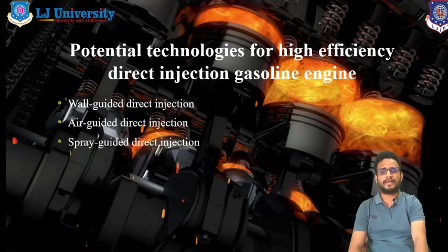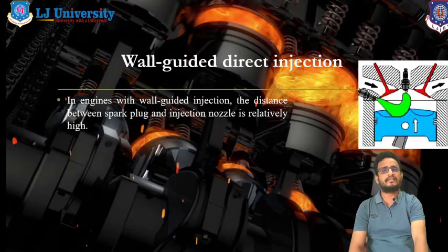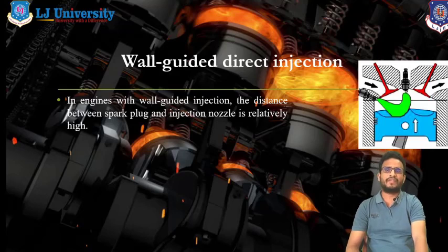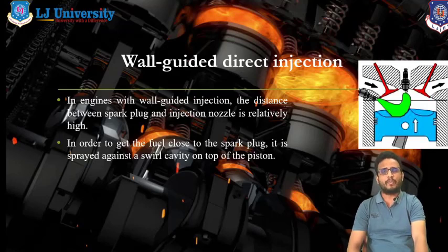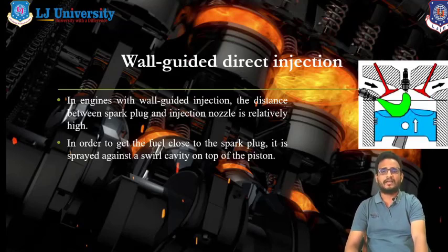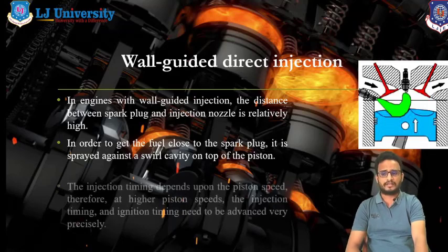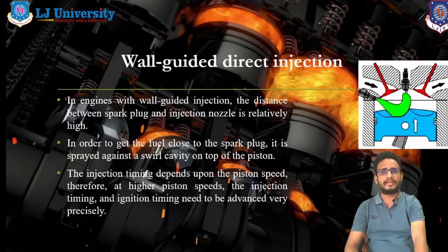Let us discuss all these systems one by one. In the wall guided direct injection system, as shown in the figure, the distance between the spark plug and the injection nozzle is relatively high. In order to get the fuel close to the spark plug, it is sprayed against the swirl cavity at the top of the piston. This means with the help of the piston wall, the spray is directed towards the spark plug to achieve better atomization at the point of combustion.